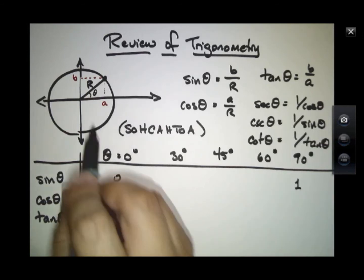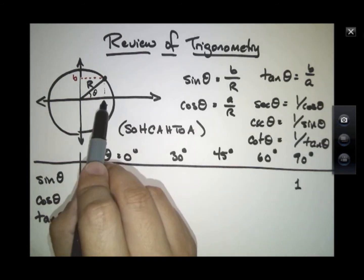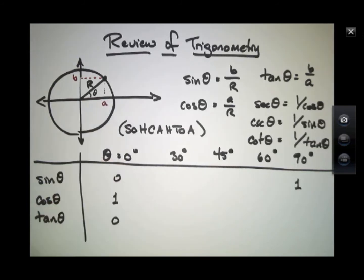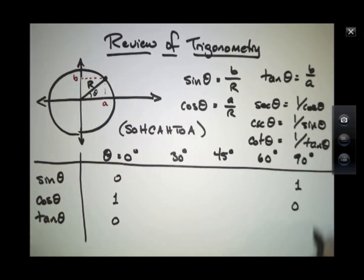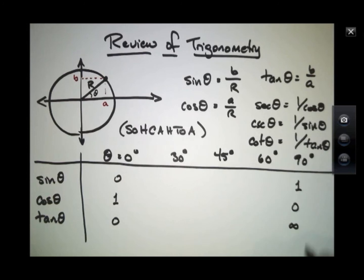The cosine will be 0, because this location A goes back in toward the origin, and actually the tangent becomes infinite.